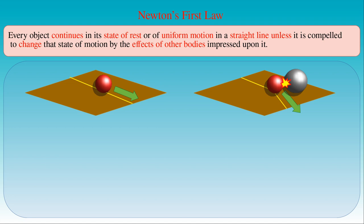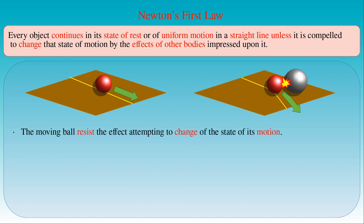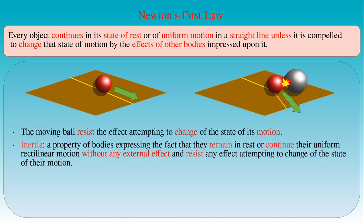At the same time, the moving ball resists the effect attempting to change the state of its motion. We attribute this behavior to a property of bodies called inertia. Inertia of bodies expresses the fact that they remain in the same state of motion without any external effect, and resist any effect attempting to change this state. There are numerous examples for the manifestation of inertia.